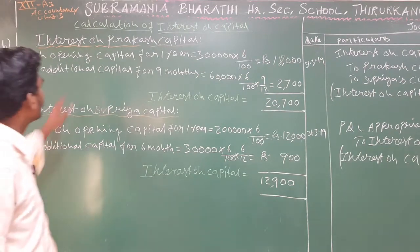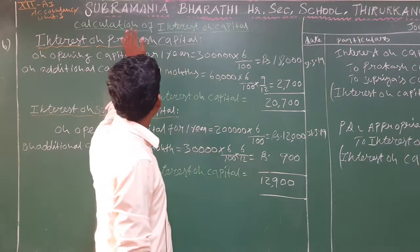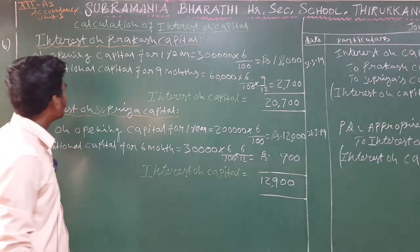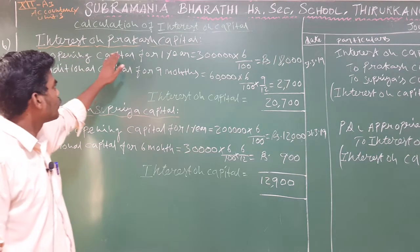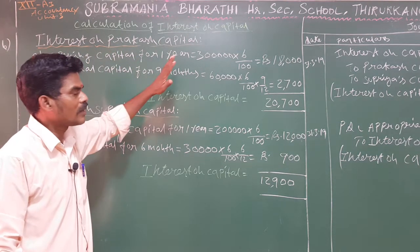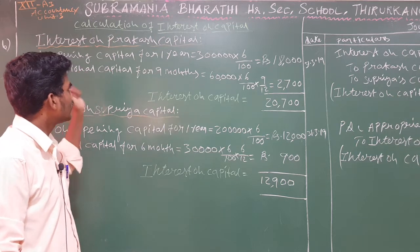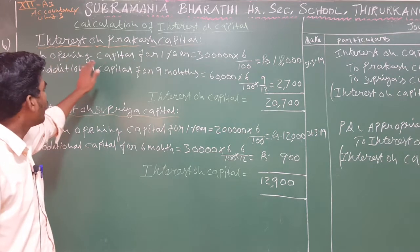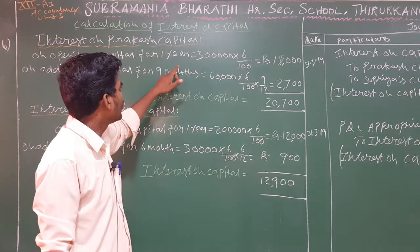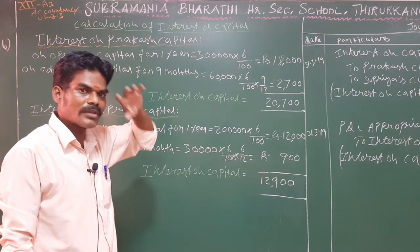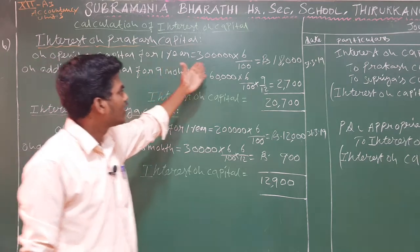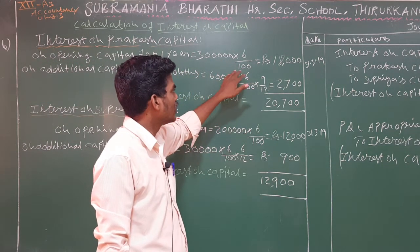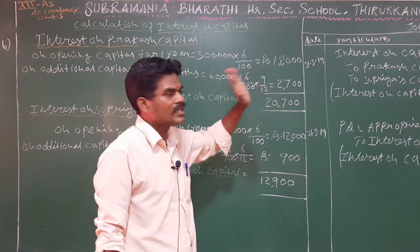This is the main calculation. The calculation of interest on capital — for the first partner, interest on Prakash's capital. Prakash's opening capital is 3 lakh. The opening capital is for the full year, so it is 1 year. 3 lakhs × 6% × 6/100 = Rs. 18,000.